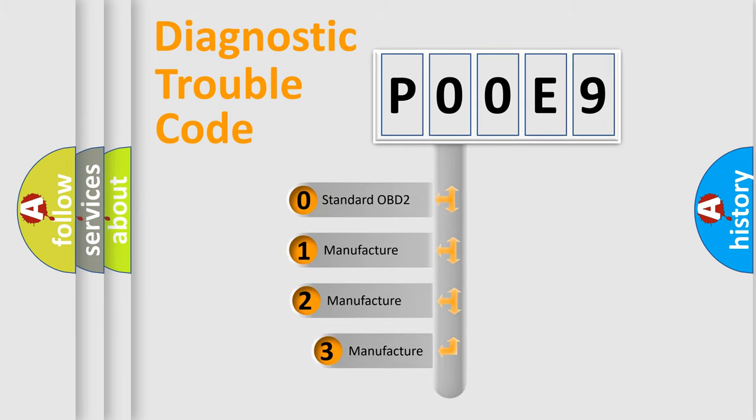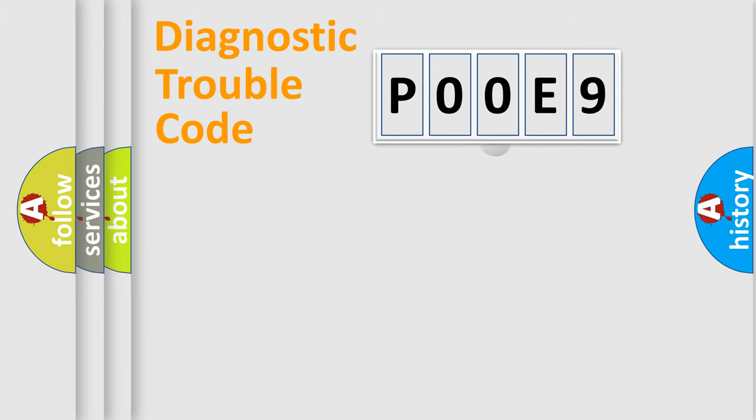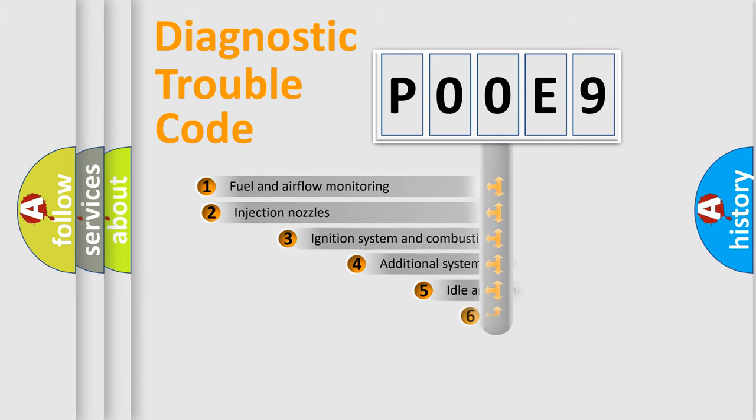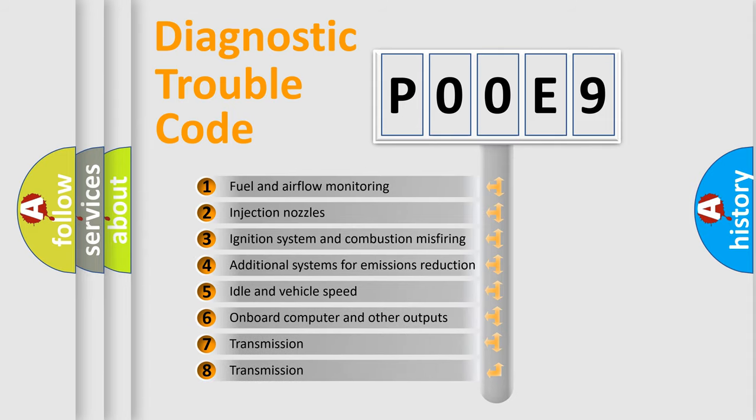If the second character is expressed as zero, it is a standardized error. In the case of numbers 1, 2, or 3, it is a more specific expression of the car-specific error.